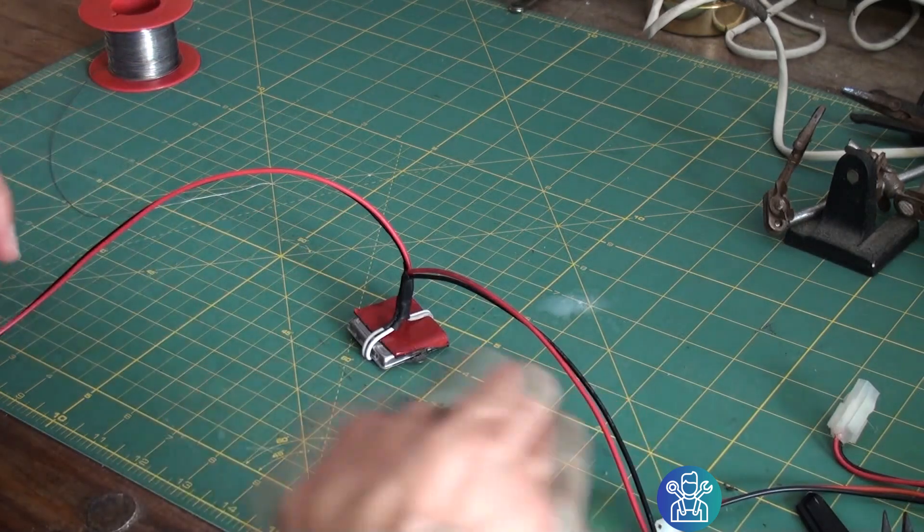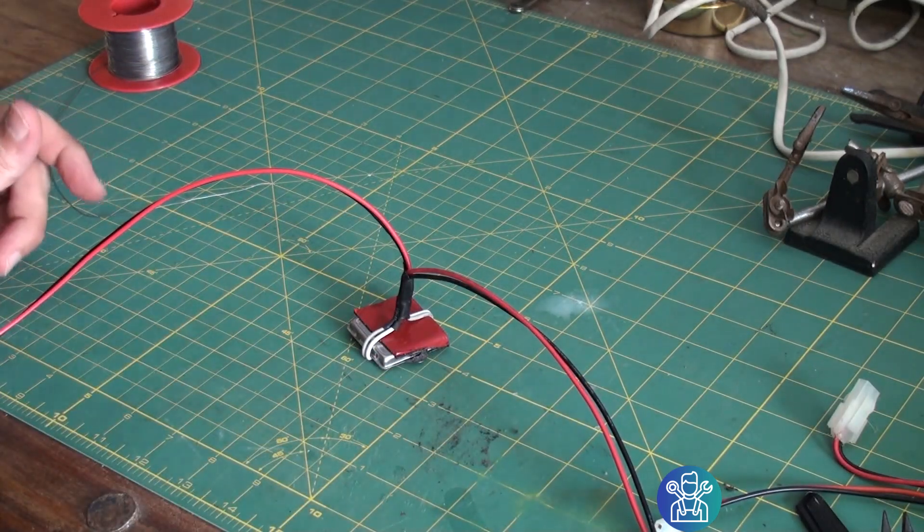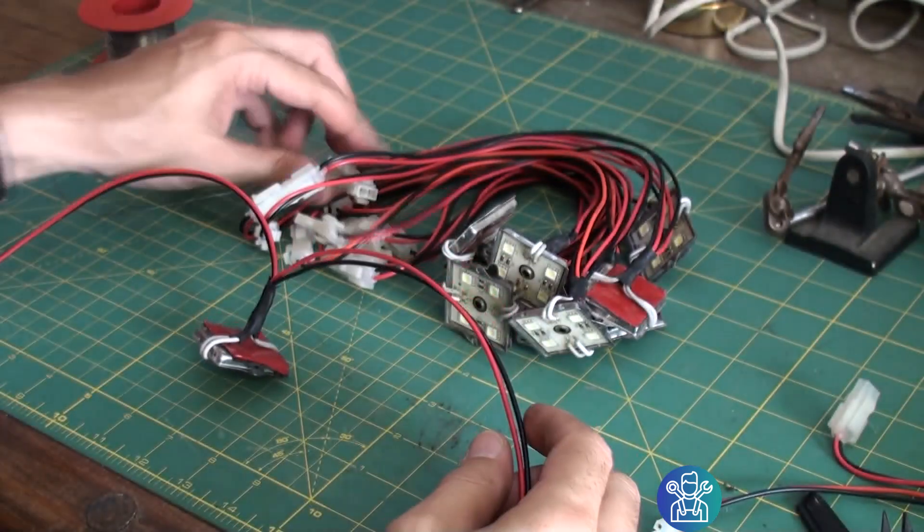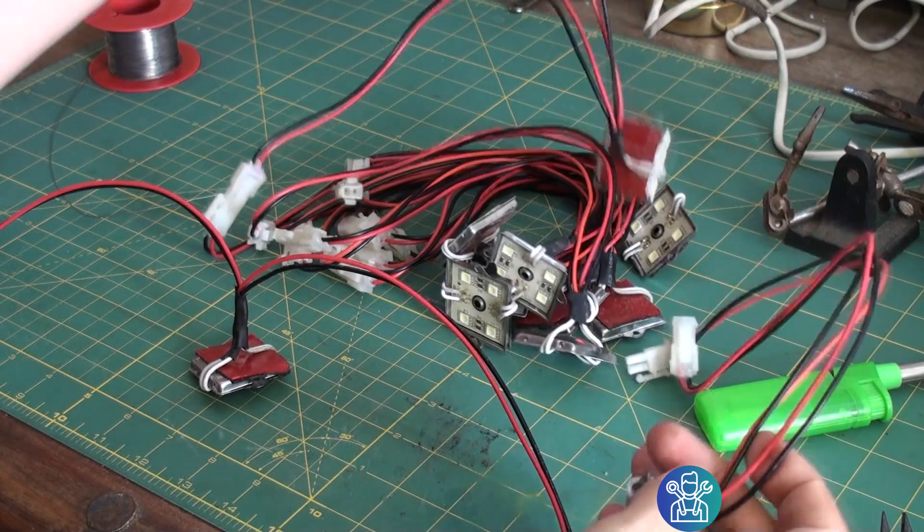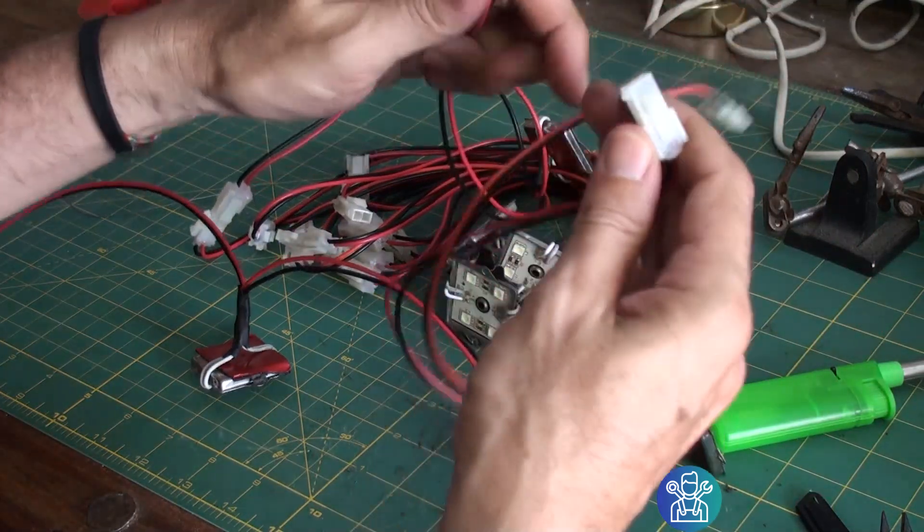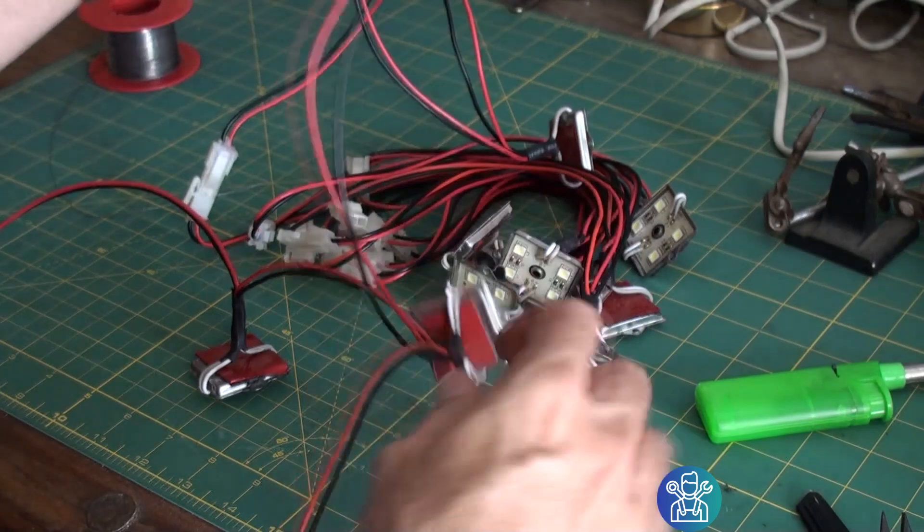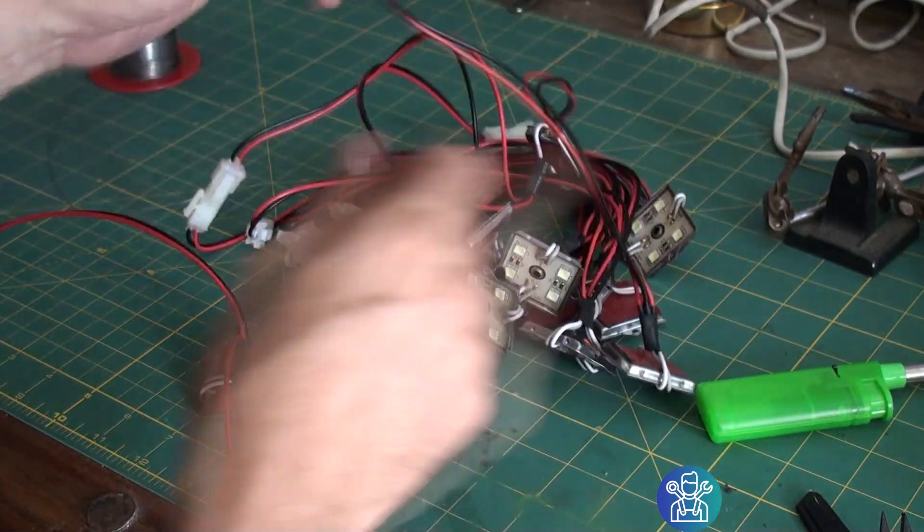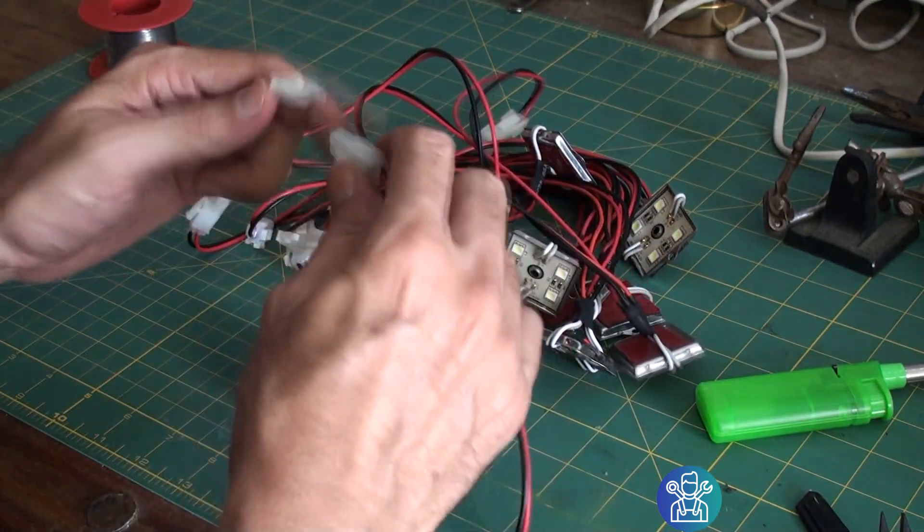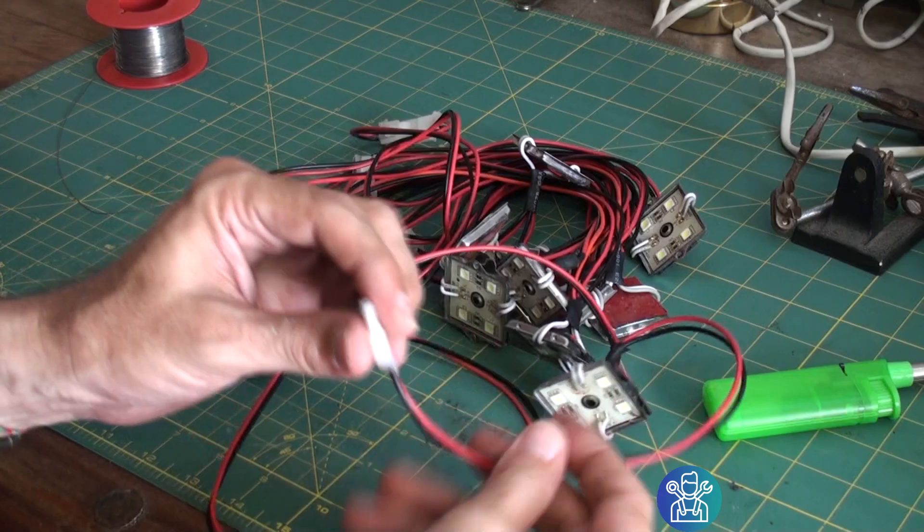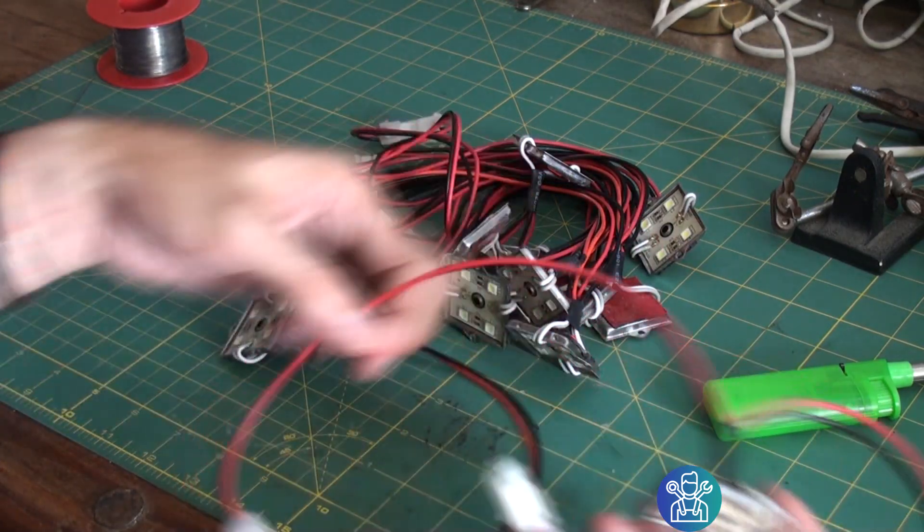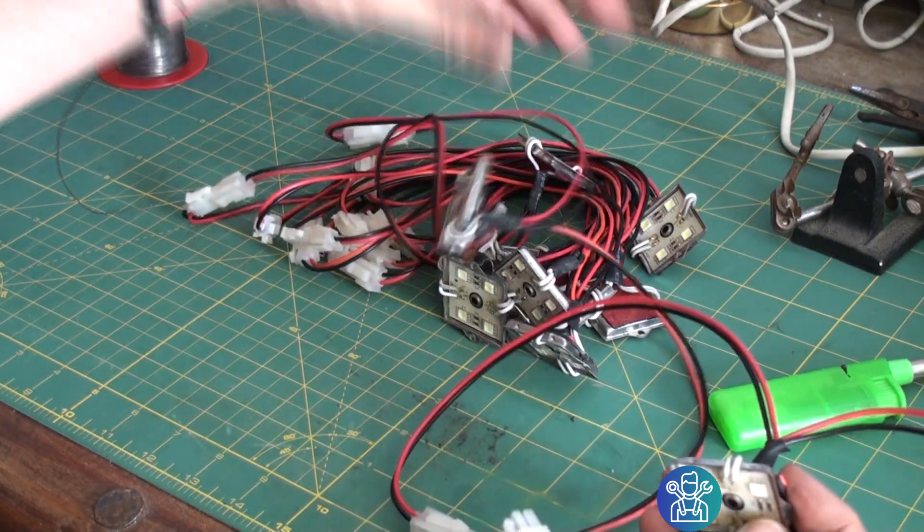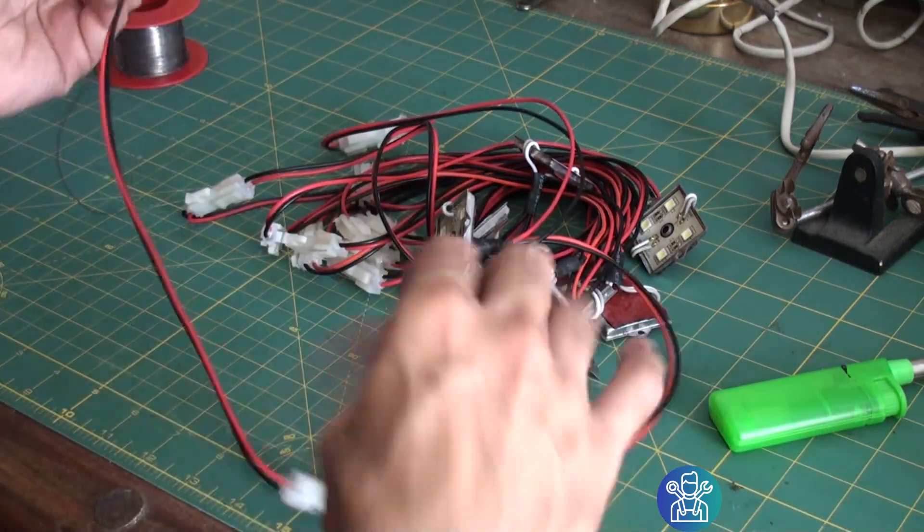So I prepared quite a lot of them as you can see, and because it's modular I can just hook each one to the next one without any problems. So we have the in going to the out, the out going to the in, and all the way. So those are the lights.